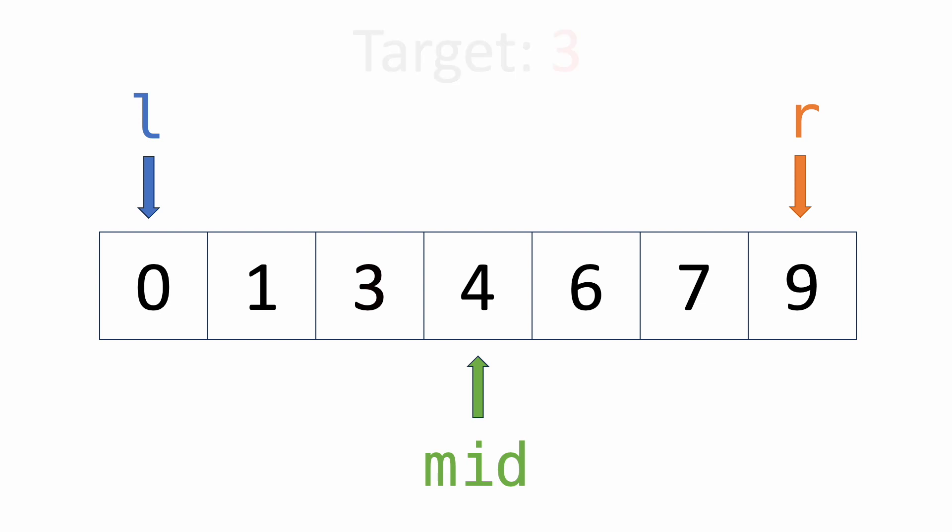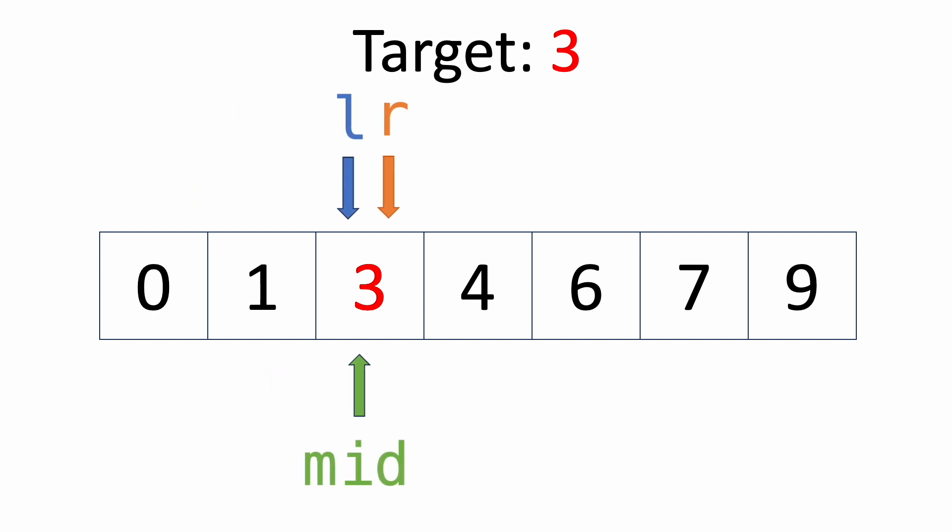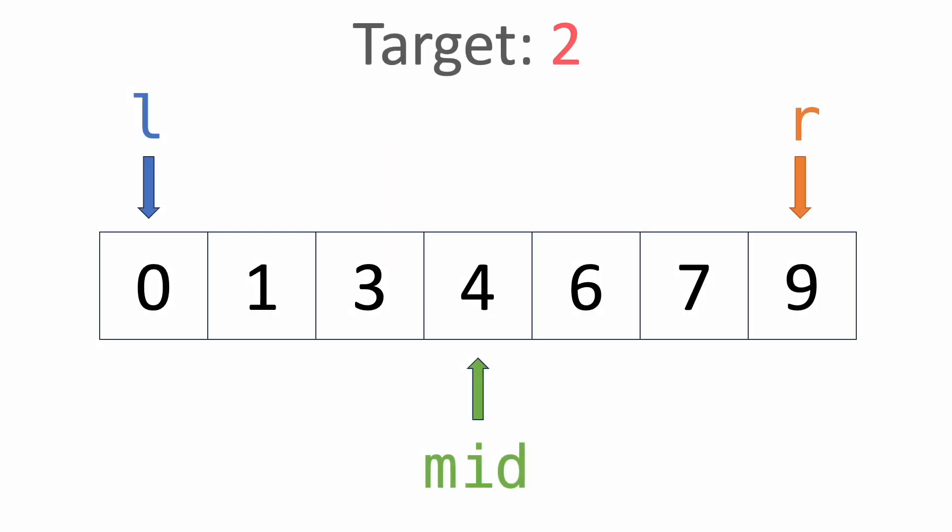Lastly, if the midpoint element is greater than the target, then by the same logic, we know that the target has to be to the left of the midpoint. So we'll update the right bound to be one element before the midpoint. Then we'll keep repeating this until we either find the target, or if the target doesn't exist in the array, then the two bounds will converge and eventually pass each other, meaning that the target was not found. With each iteration, we eliminate around half of the array.